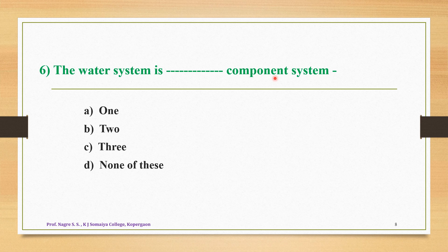Question number six: the water system is a how-many-component system — option A is 1, option B is 2, option C is 3, and option D is none of these. The water system has one chemical composition, H₂O, which can express all phases of the water system quantitatively. Therefore the water system is a one-component system, and the correct answer is option A.